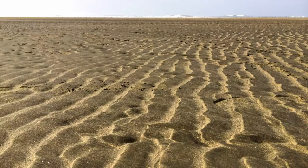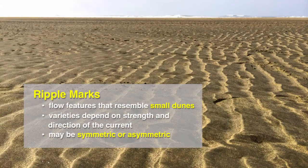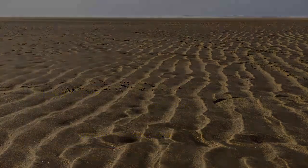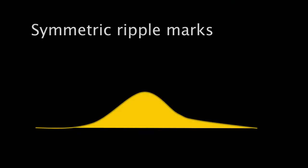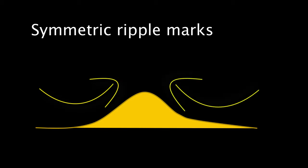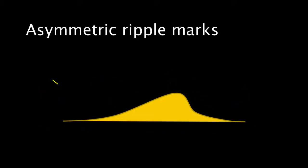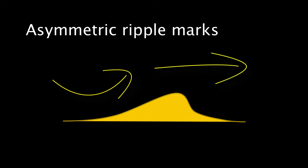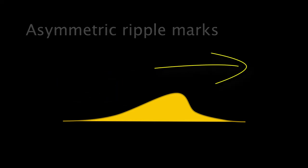We also see ripple marks, and these features resemble small sand dunes. The varieties depend on the strength and direction of the current, and we have a couple of kinds: symmetric and asymmetric. Symmetric ripples are caused by two currents, like swash and backwash, or flows that alternate between two different directions. Asymmetric ripples are created by a shallow current that flows in a single direction, with the peaks of the dunes inclined in the direction of the current.